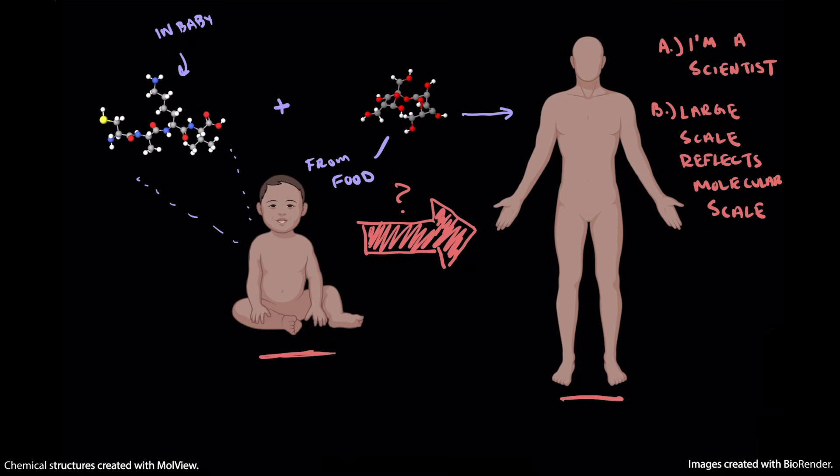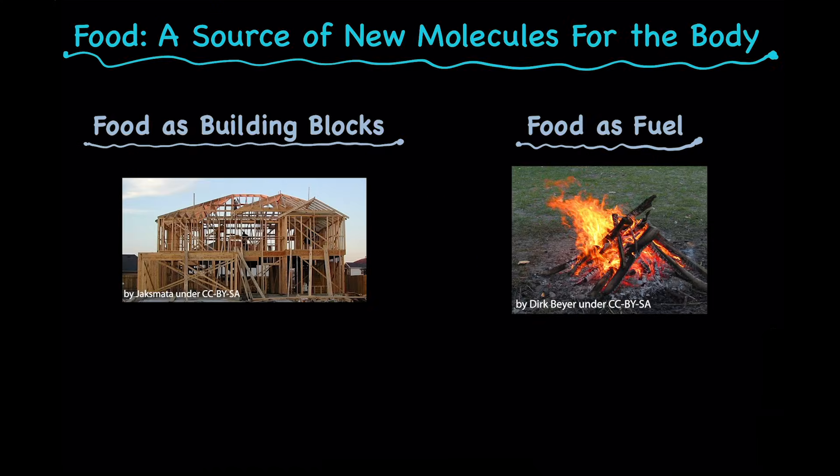And to understand this, we can actually make a comparison here between food and wood. So what I mean by that is that the molecules in food interact with the molecules in our bodies in two primary ways.